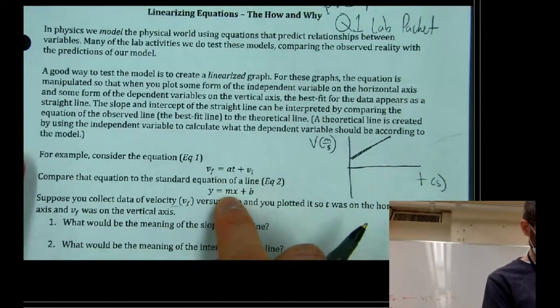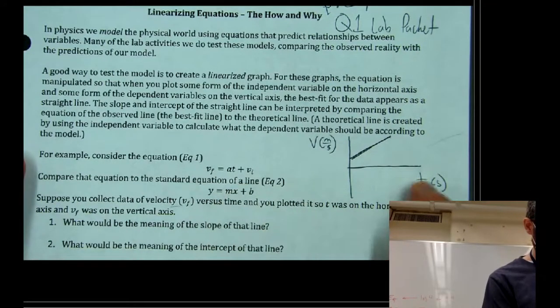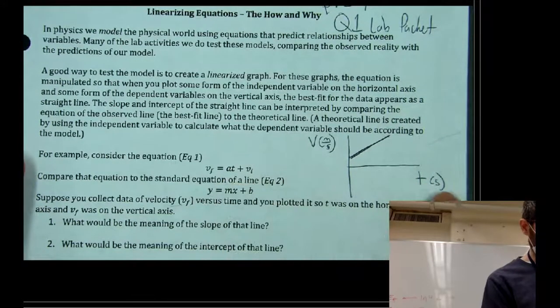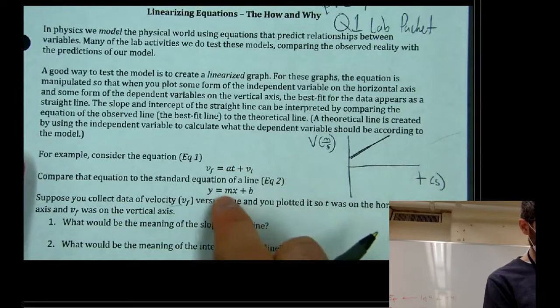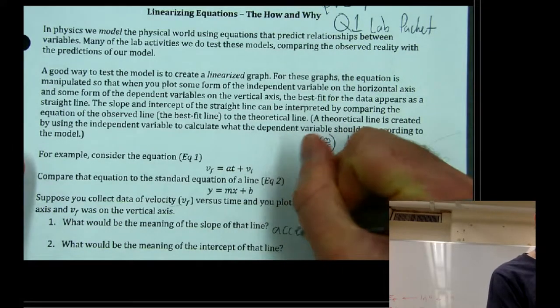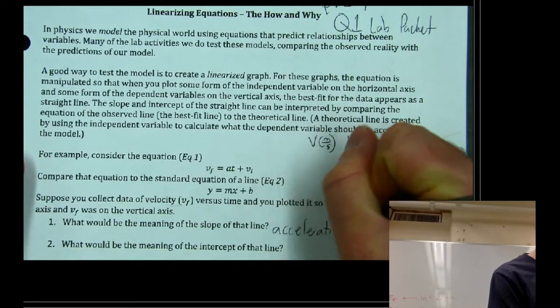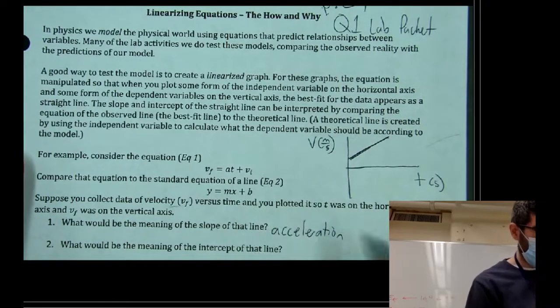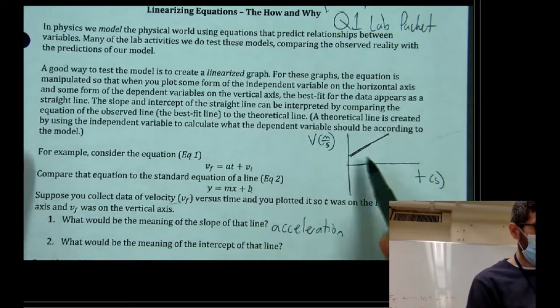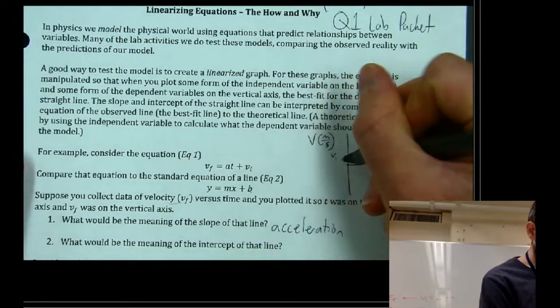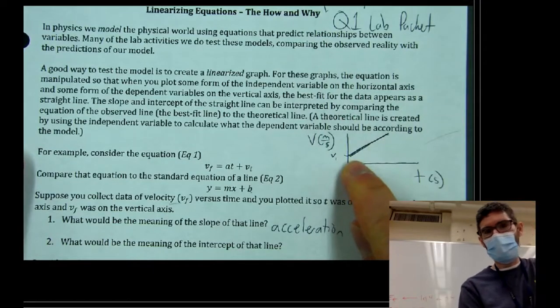So what would be the meaning of the slope of that line? Well, the m term is your slope. And since you plotted your independent variable on the horizontal axis, t, the multiplier of t in the equation, the multiplier of your independent variable, that's going to be your slope. So in this case, your slope actually is going to be acceleration. Your intercept, the thing that gets added to the independent variable term, the b term, in this case, it would actually represent your initial velocity, the speed that it was started at.